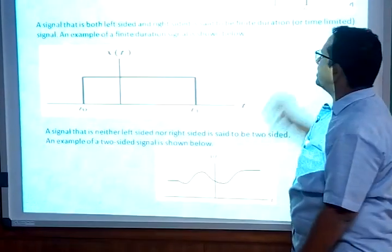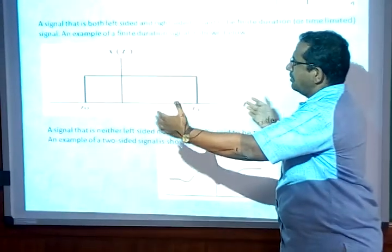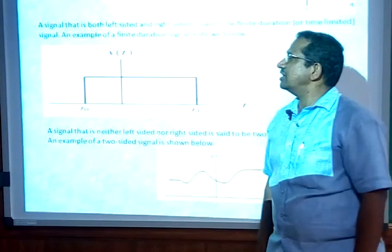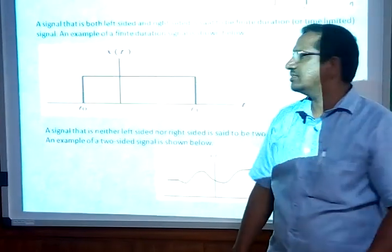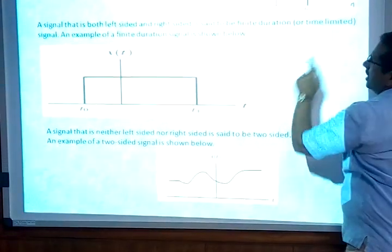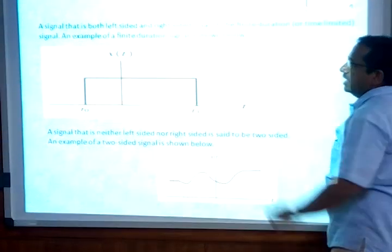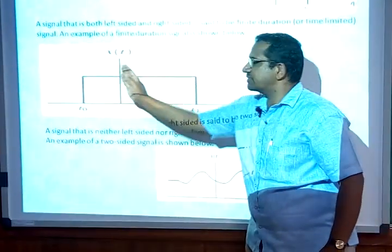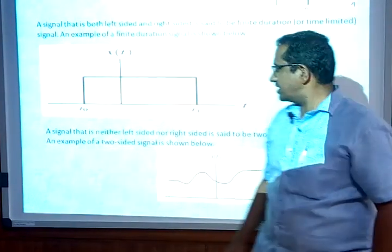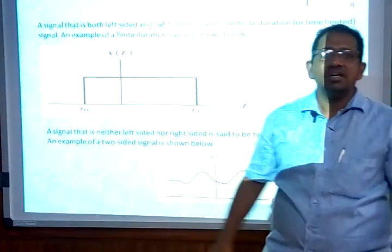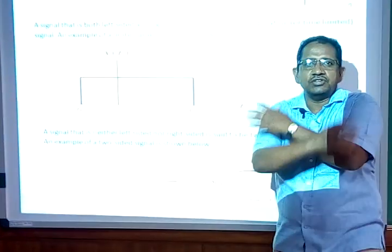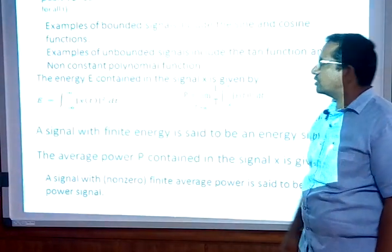A time-limited signal is a combination of both left-sided and right-sided signals. A signal that is both left-sided and right-sided is a time-limited signal — it exists between T1 and T0. A two-sided signal extends over both left and right sides continuously over an infinite duration of time period.